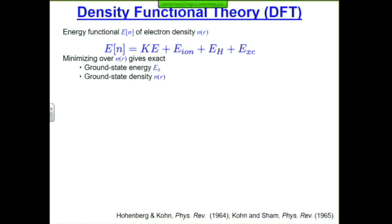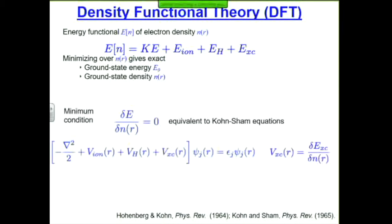DFT tells you that the energy of the electrons can be described in terms of their density N(R). This energy is written as a sum of kinetic, electron-ion, electron-electron interaction, the Hartree term on average, and then a correction called exchange and correlation. In principle, it can give you the exact ground state energy of your system — the lowest energy state of the electrons and where they're distributed on average, the electron density. You minimize this functional of the density to get the optimum.